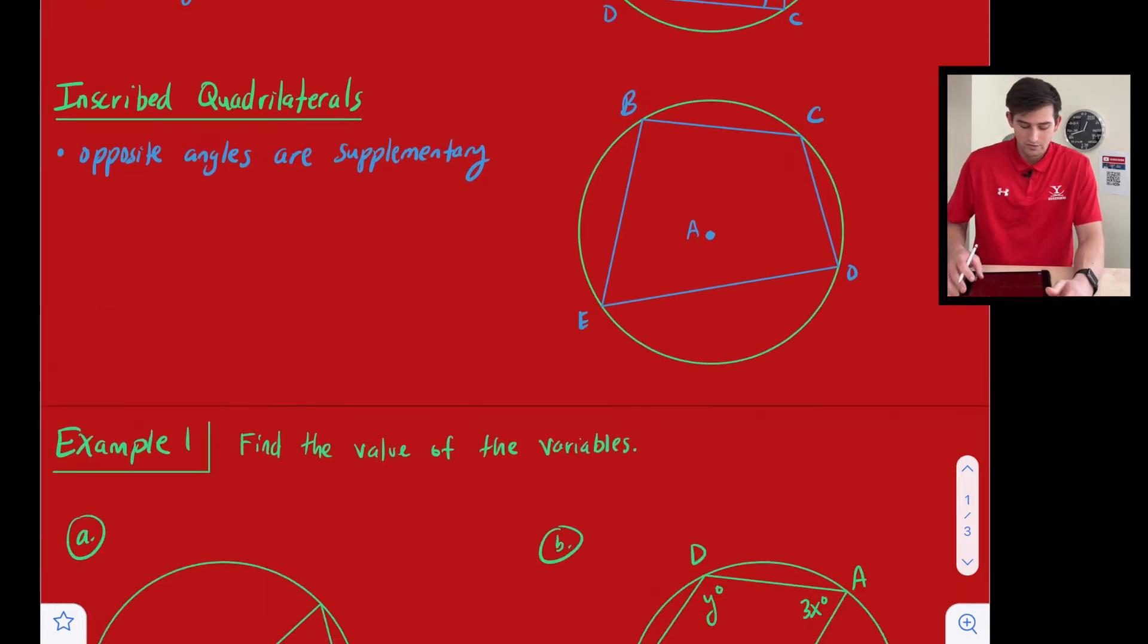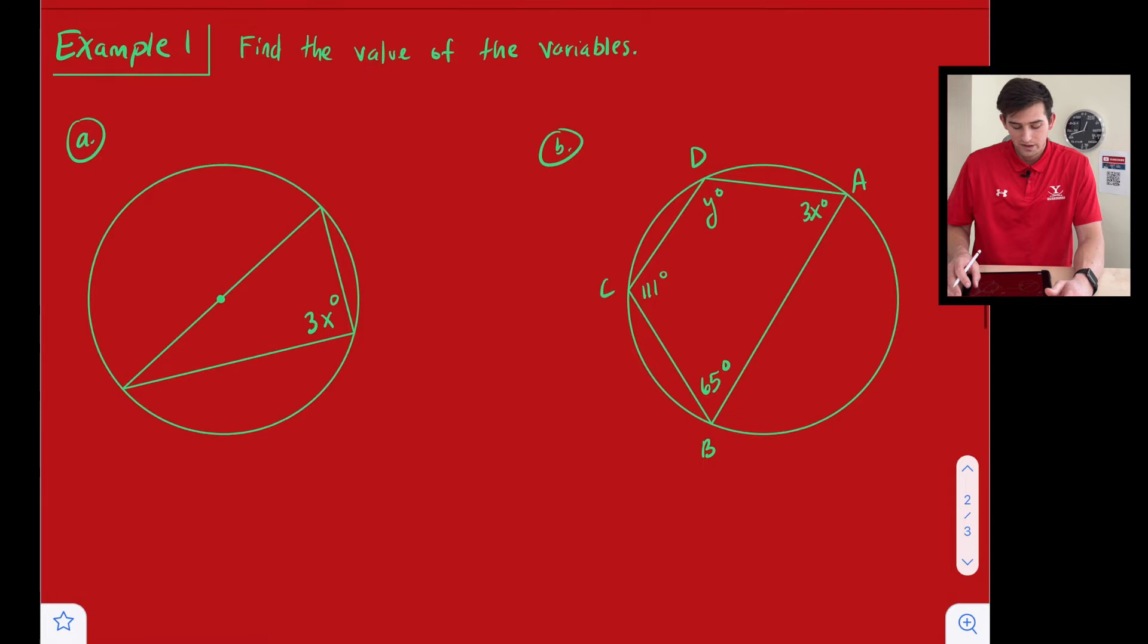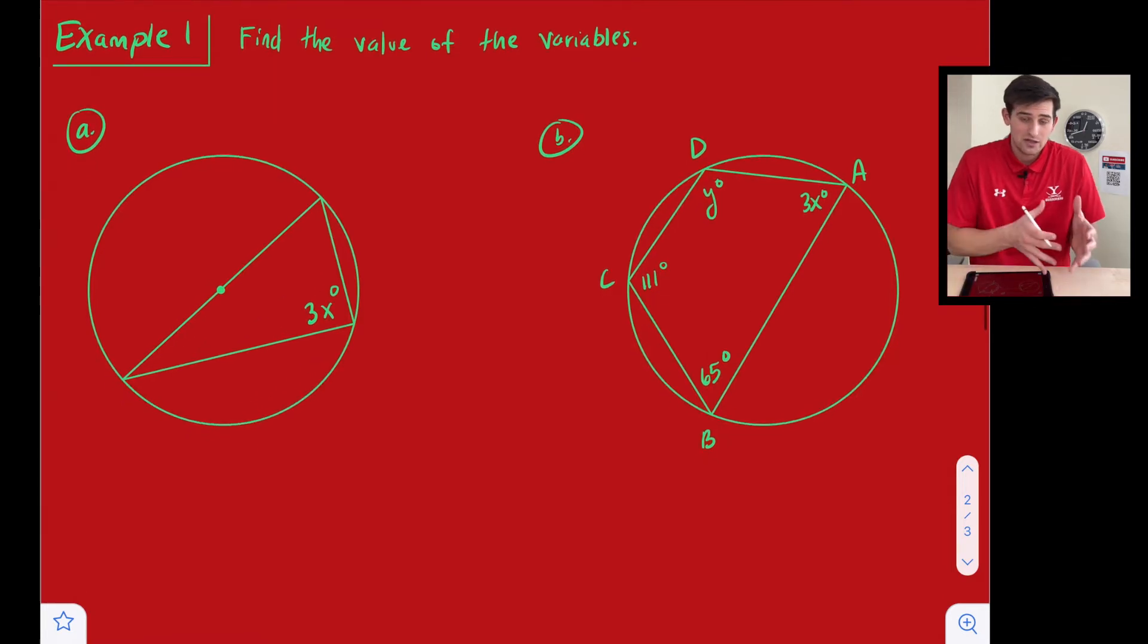Okay, so we're going to look at one example where we find the value of some variables when we're dealing with an inscribed right triangle, like on example 1A, and an inscribed quadrilateral on example 1B.